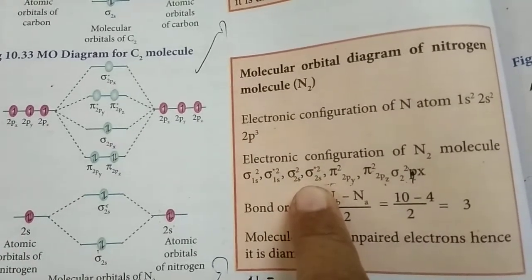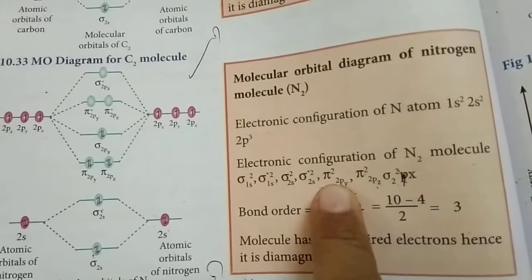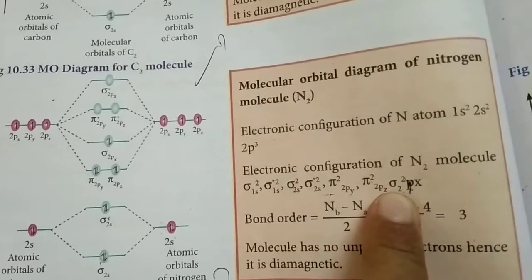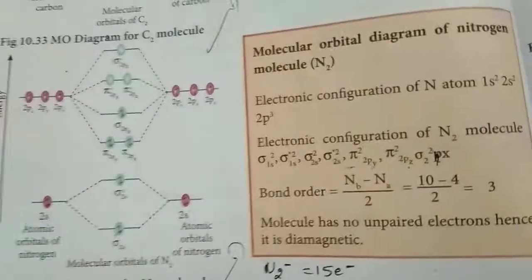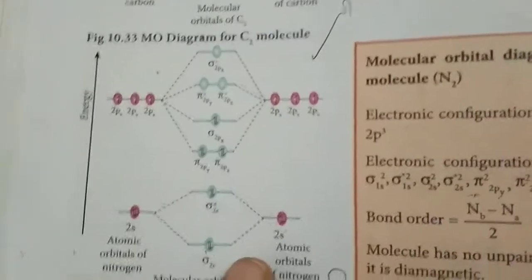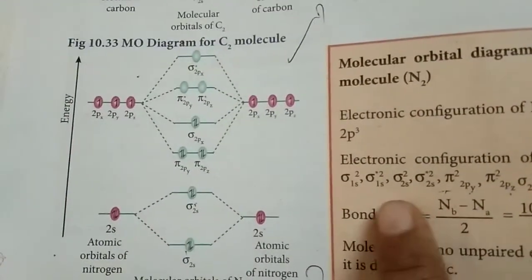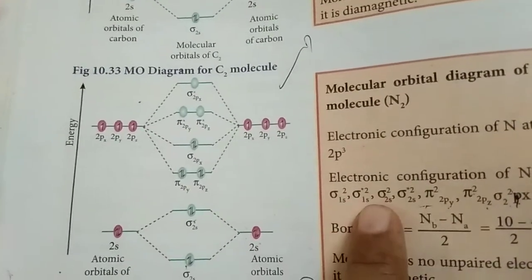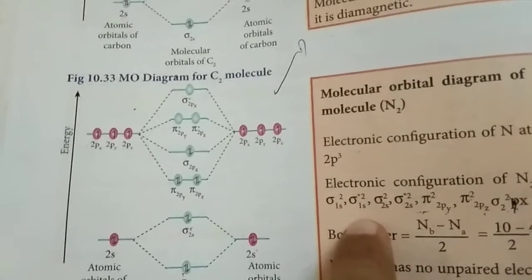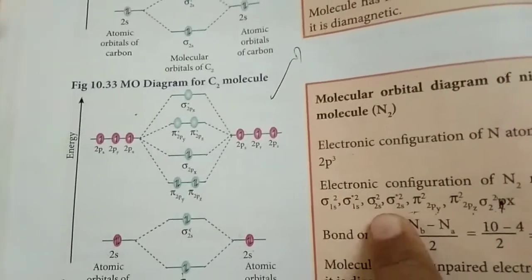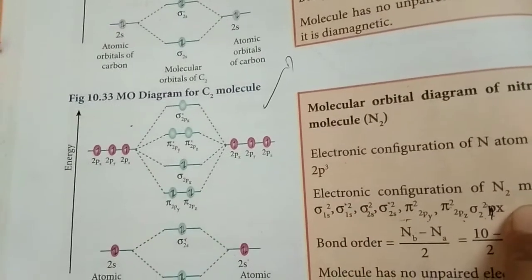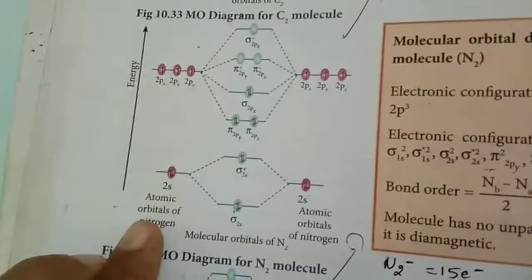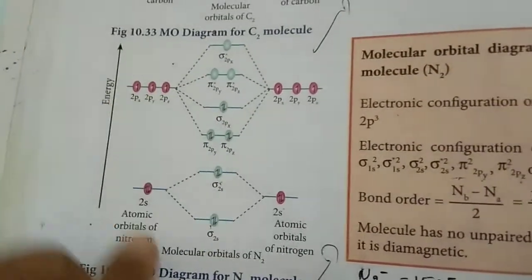The molecular orbital electronic configuration for N₂ is: σ1s², σ*1s², σ2s², σ*2s², π2py², π2pz², σ2px². We need not write out the σ1s and σ*1s explicitly — we can represent them as KK. So we draw the molecular orbital diagram starting from σ2s².